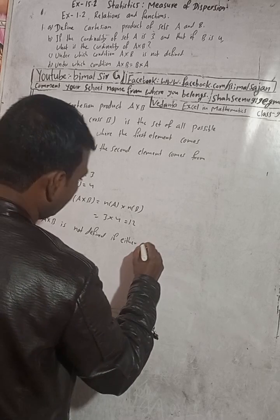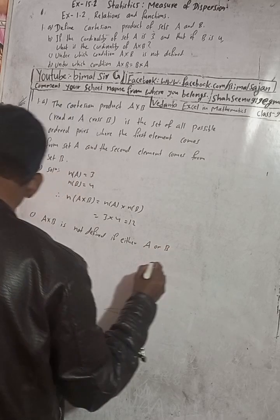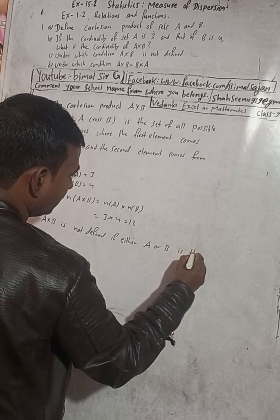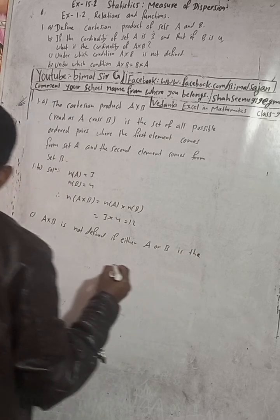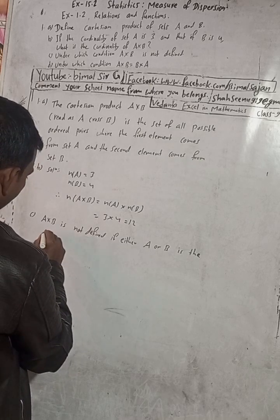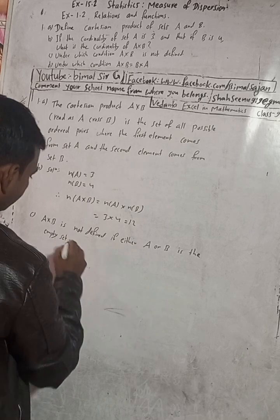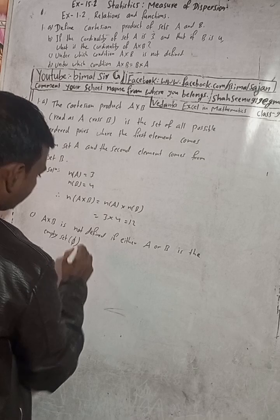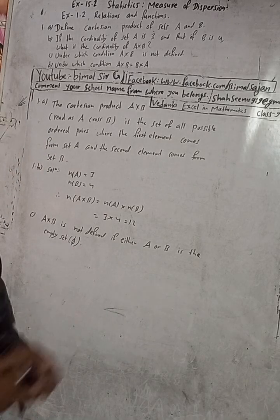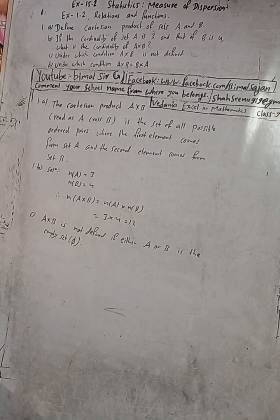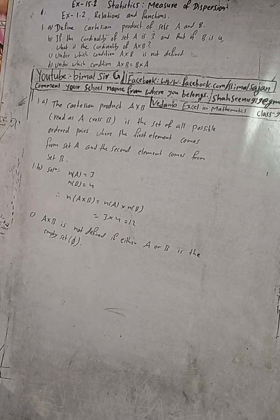...if either A or B is the empty set, meaning the cardinality of A cross B — either A or B is empty.